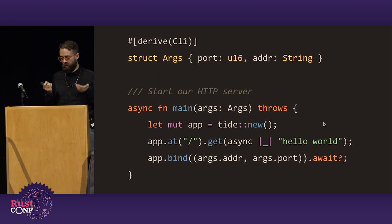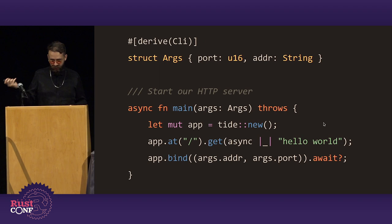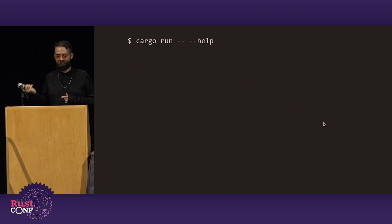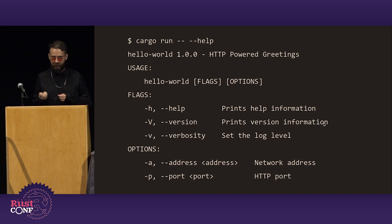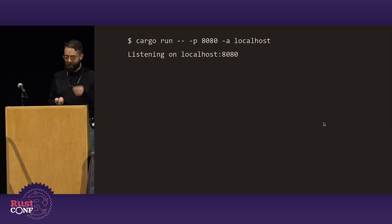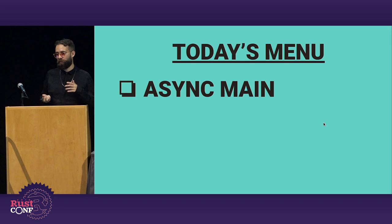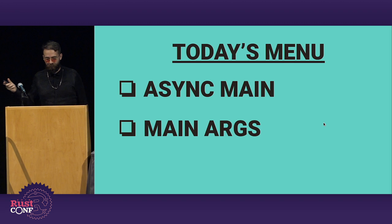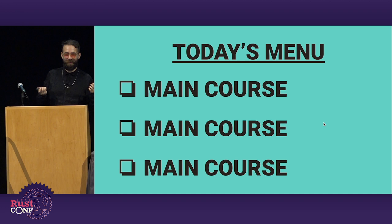We also add some logging to this thing. Running it with a help flag gives you pretty basic but useful output. Running it with a port of 8080 and localhost gives you 'listening on localhost:8080' and the thing is running. So for today, we're going to cover three topics: how to get async function main, how to get main args — arguments in main — and finally, improving errors in main. Or as I like to say, we have three main courses.